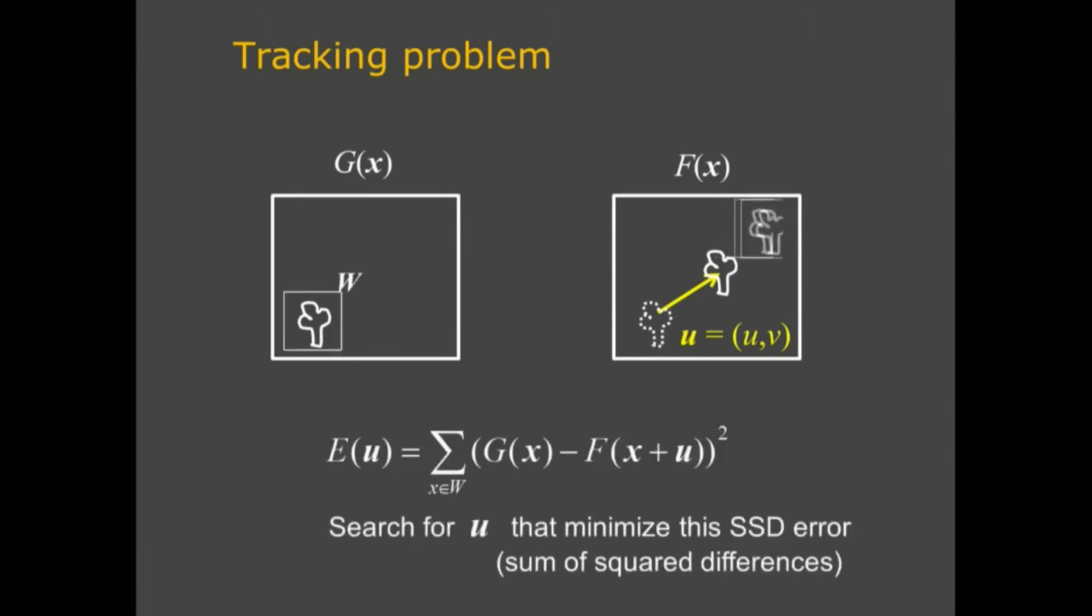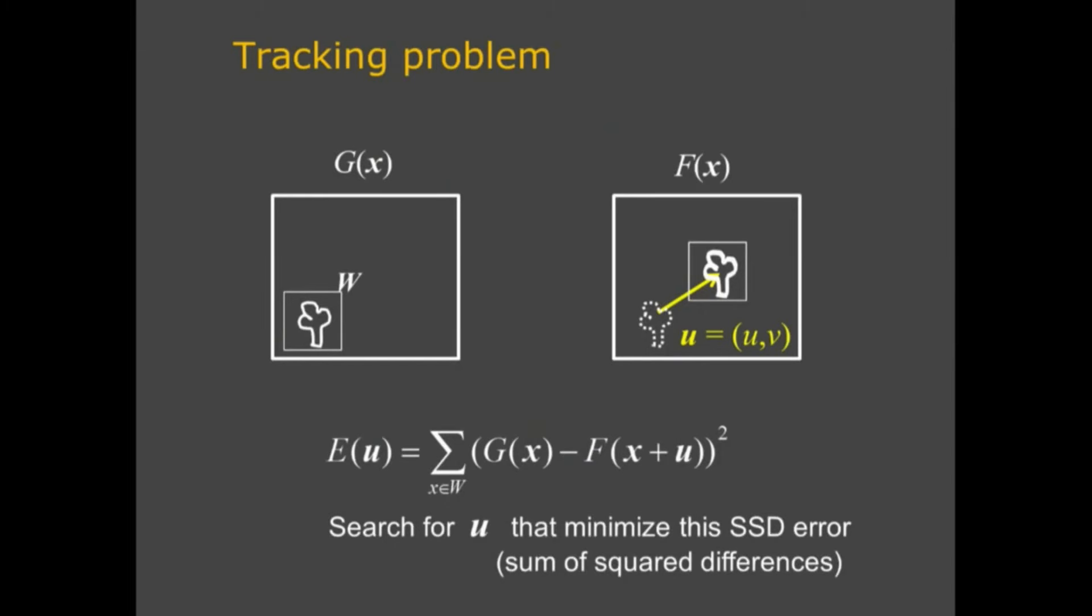It's a very basic problem, and the simplest solution, the idea is make a small window, and search in the next window to see whether there's a same pattern. And that can be summarized as Gx, which is the small window, minus Fx difference of Fx plus U. U is the shift view, and you make the difference, compute the difference between each individual pixel and square them, square the difference and sum over the window. And then, if the two patterns are exactly the same, that should be zero. Therefore, the correct answer should be U that minimized this error.